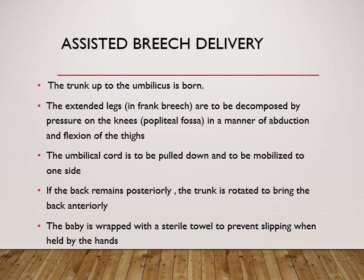The trunk up to the umbilicus is born. The extended legs in frank breech are then decomposed by applying pressure on the popliteal fossa in a manner of abduction and flexion of the thighs. The cord is pulled down and mobilized to one side to avoid compression. If the back remains posteriorly, the trunk is rotated so that it comes anteriorly. The baby is wrapped with a sterile towel to prevent slipping when held by the hands.